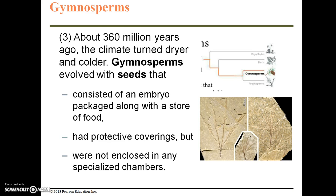Gymnosperms evolved about 360 million years ago. During this period, the climate turned drier and colder. Gymnosperms evolved with seeds consisting of an embryo packaged along with a store of food, with protective coverings but not enclosed in any specialized chambers. At this point the lecture will pause and pick up in the next recording.